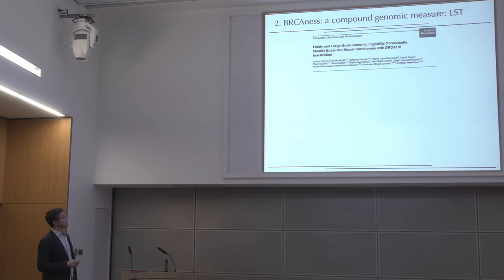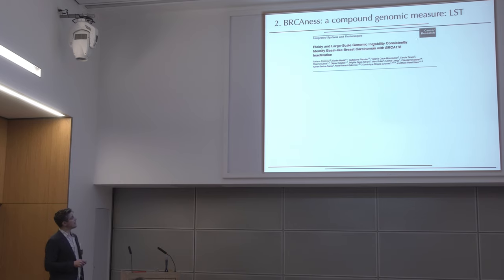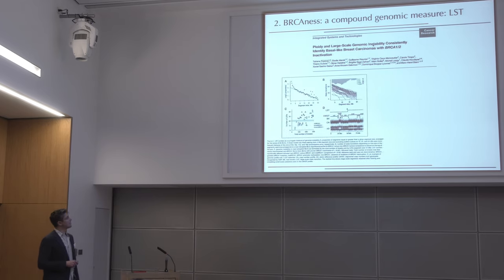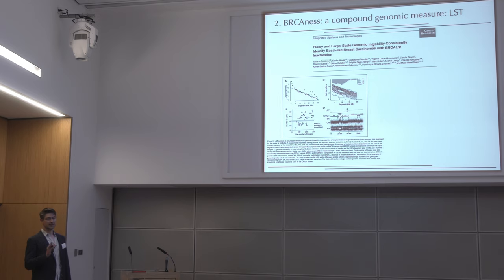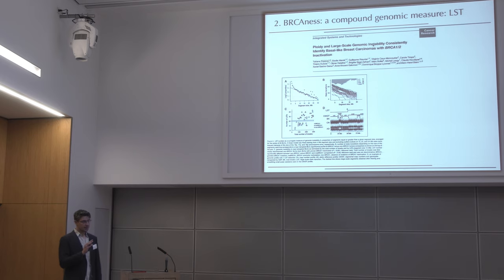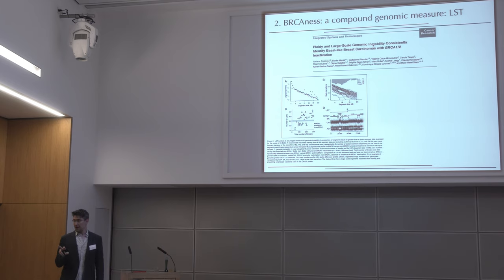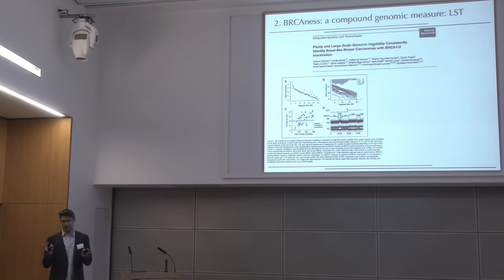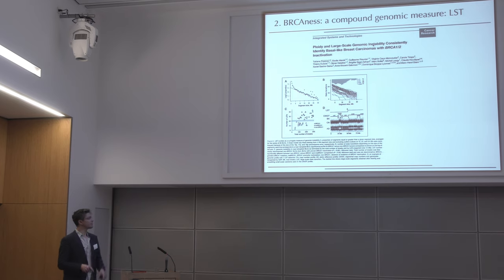The second quantitative measure of genomic instability is the LST — number of large-scale state transitions — from Popova et al. 2012. It's similar to the HRD criterion, but instead of counting segments we count breakpoints. We apply the same 3 megabase pair smoothing window, then count those breakpoints where on either side of the breakpoint the segment is at least 10 megabase pairs. In both settings we count big segments: HRD counts the segments themselves, LST counts breakpoints with big segments on either side.